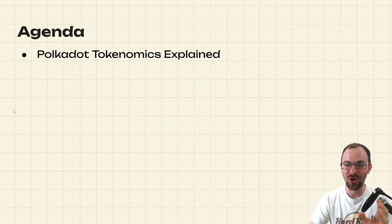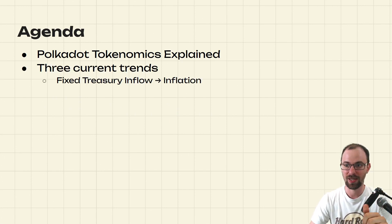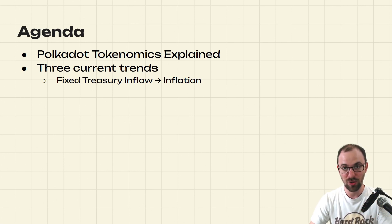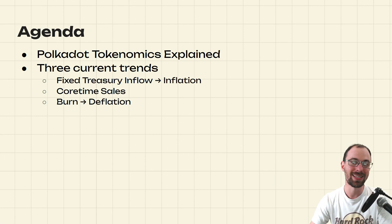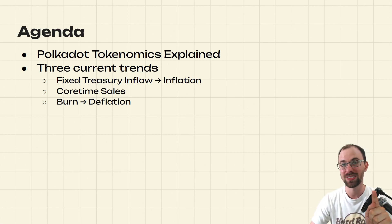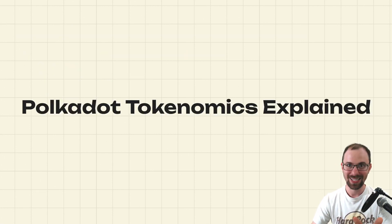Today we are going to talk about the existing tokenomics of Polkadot and then three current trends. Number one is fixed treasury inflow — this is part of inflation. Number two is coretime sales and burn mechanics being discussed — a deflationary mechanism. If you're only interested in one topic, you can jump to the right time markers in the description. Let's jump in.